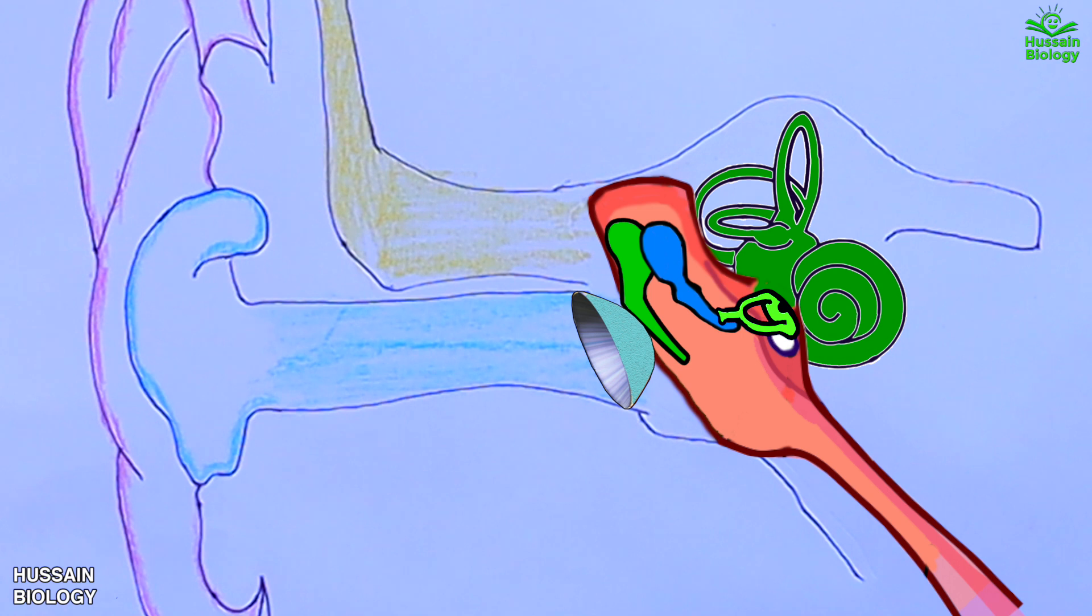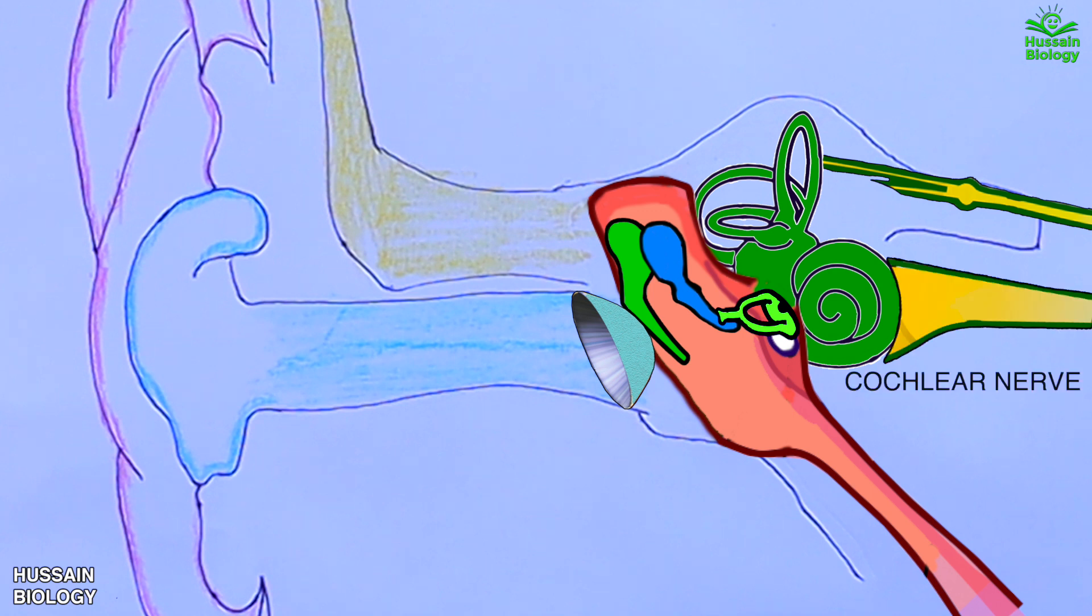Now we have the cochlea, which is a fluid-filled structure, and it has got semicircular canals as shown in the diagram. These semicircular canals are connected with vestibular nerve and the cochlea is connected by cochlear nerve.